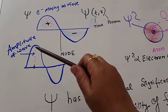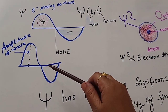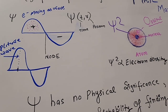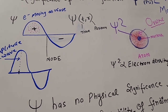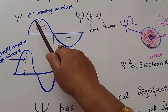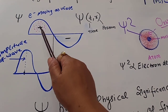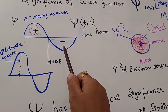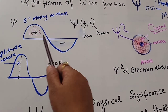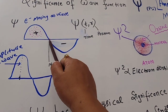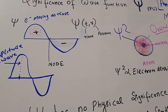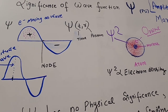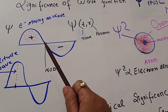Amplitude means it is the height of the crest or it will be the depth of the trough. Here we can see that if there is one particle — an electron — moving in a particular wave, at one time its probability will be very high in one region, and in another region the probability will be very less. It can be positive, it can be negative, and there is a place where there is no possibility or probability of the electron being present. This region is known as the node.